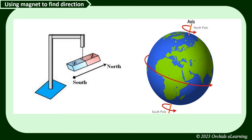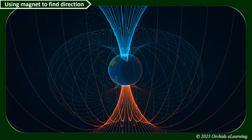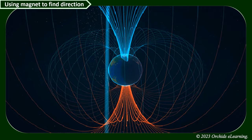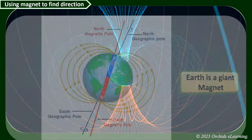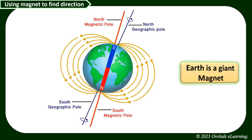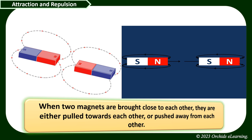Do you know why a freely suspended magnet always points in the earth's north-south direction? It behaves as if it is under the influence of another magnet. But where is that other magnet? It is the earth itself!